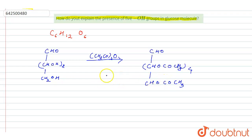As we know that only alcoholic groups react with acetate anhydride to form an acetyl derivative. So from this, we can say that when this glucose reacts with acetyl anhydride...